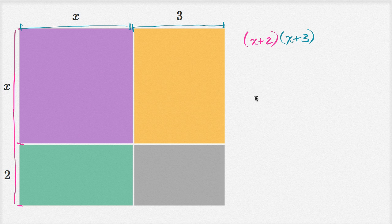But now let's express it as a trinomial. To do that, we can break down the larger area into the areas of each of these smaller rectangles. So what's the area of this purple rectangle right over here?